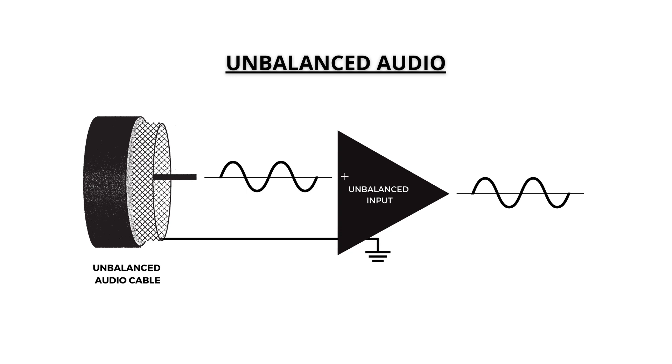The problem with this type of connection, however, is that any noise or hum that is picked up by the cable will be added to the original microphone signal and will be amplified along with it by the mixer or audio interface. There are many ways noise gets introduced into an audio signal chain, the most common being from nearby electronic devices or radio waves.